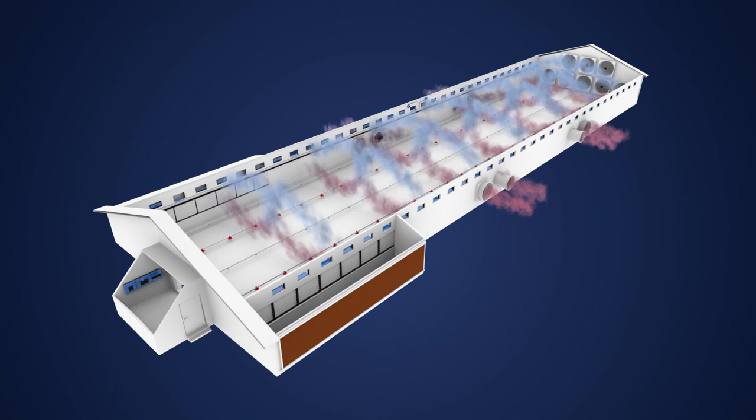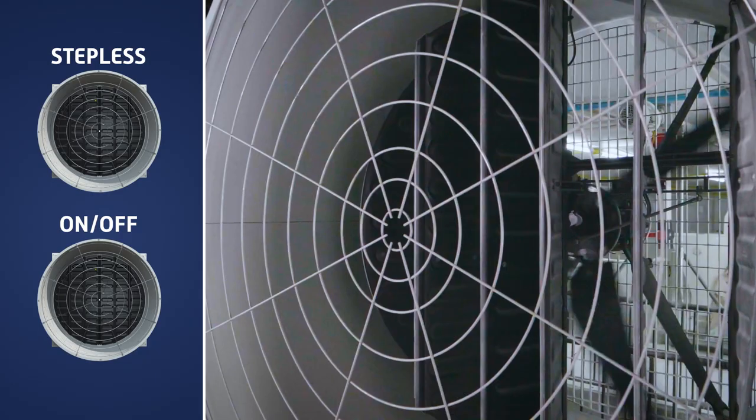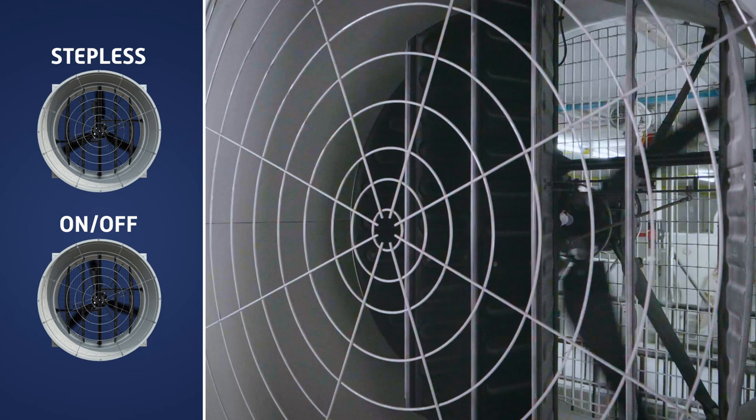The BF50 is used in tunnel houses as well as in combi tunnel houses for side mode and tunnel mode ventilation. The fan is available in stepless 0-100% variants as well as traditional on-off variants.